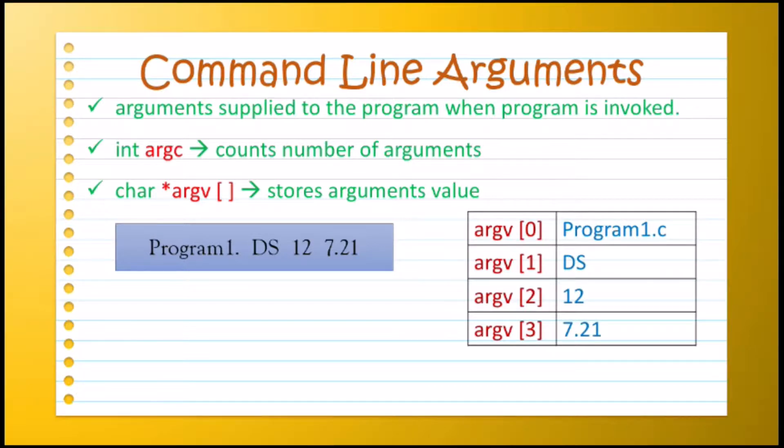First argument will always be the program name. After that we have supplied DS, then 12, and the last one is 7.21.